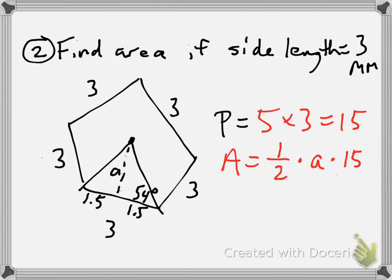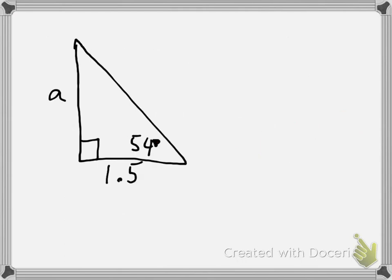The apothem cuts this side in half, so the two little segments here are congruent to each other. This is 1.5. We're gonna take this triangle and zoom in.